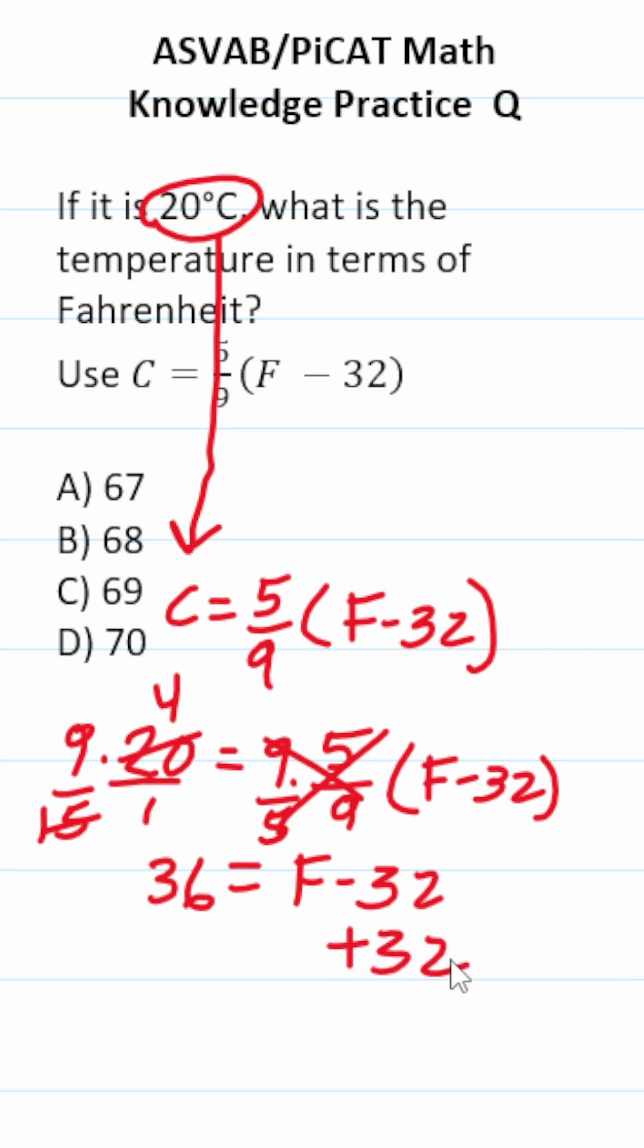Let's add 32 to both sides to get F by itself. This crosses out, leaving you with F over here. 6 plus 2 is 8. 3 plus 3 is 6. So that is going to be B.